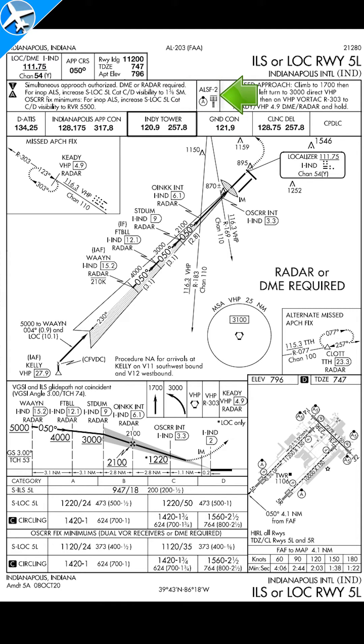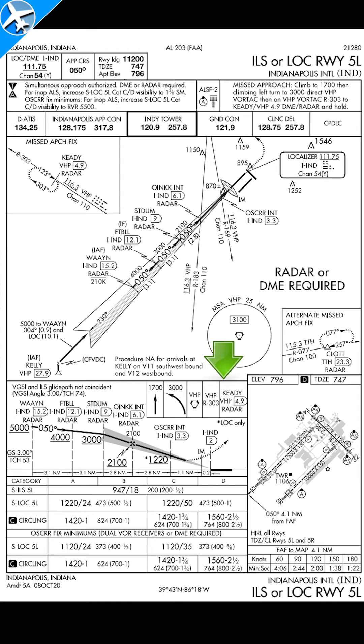Next is the approach lighting system information. This is the ALSF, or approach lighting with sequence flashers. The missed approach procedure is written out here, and you can also see a pictorial description down here.